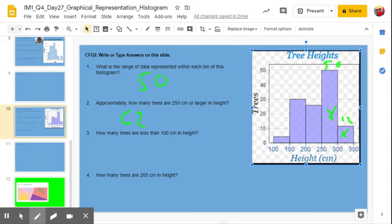How many trees are less than 100 centimeters in height? Less than 100 centimeters. Okay. So that means we're talking about, well, wait a minute. The first bin is from 100 to 149. So we're talking about over here, less than 100. There's no bin there. There's none. So zero is our answer here, right?